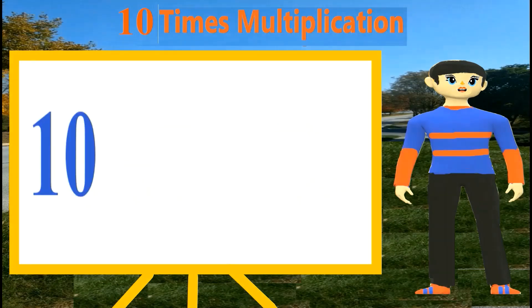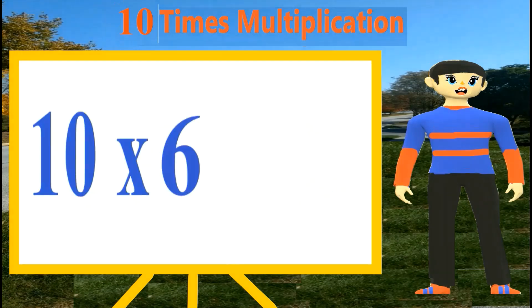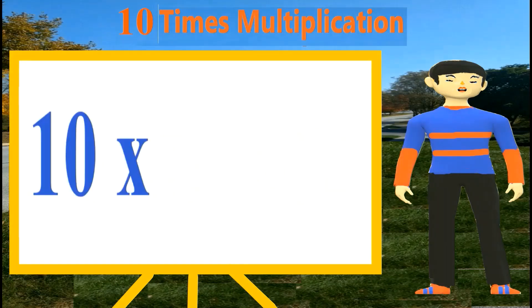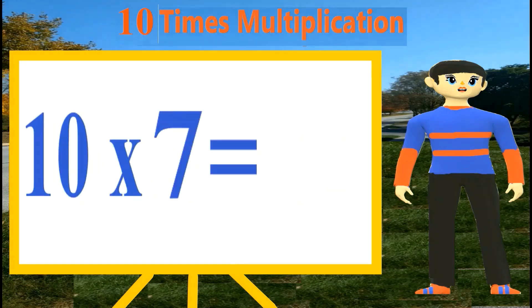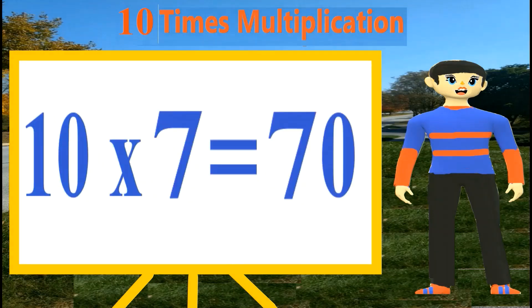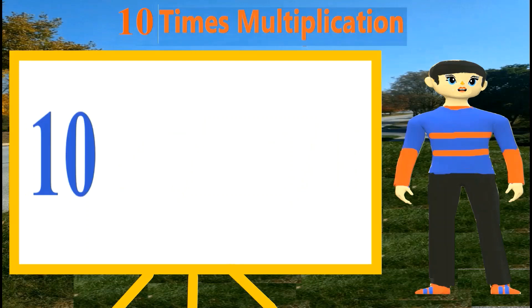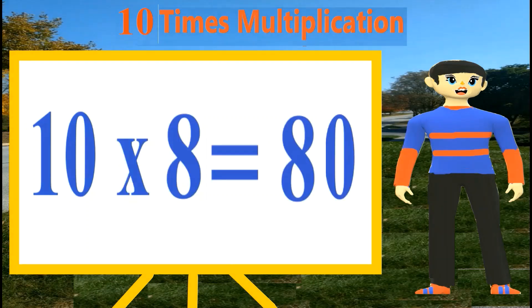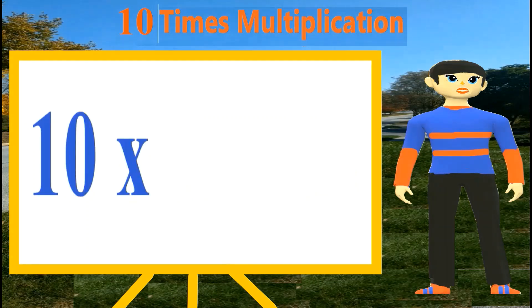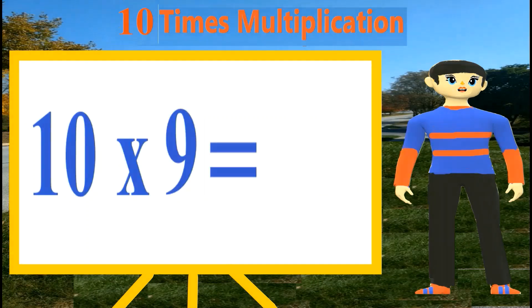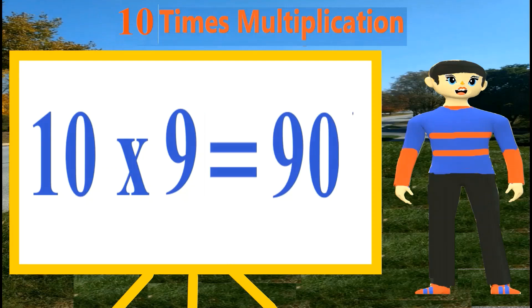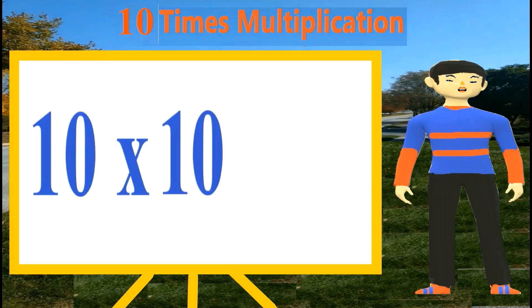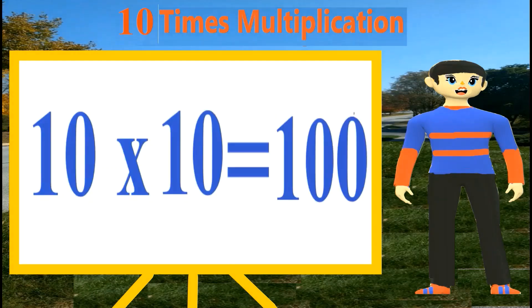Ten sixes are sixty. Ten sevens are seventy. Ten eights are eighty. Ten nines are ninety. Ten tens are one hundred.